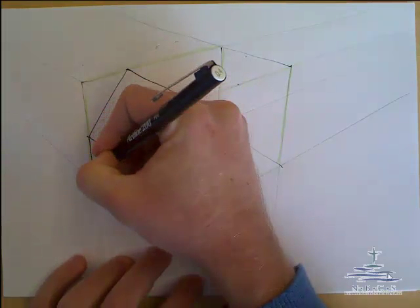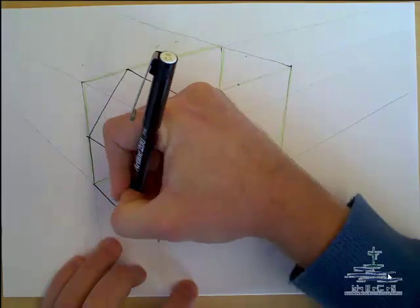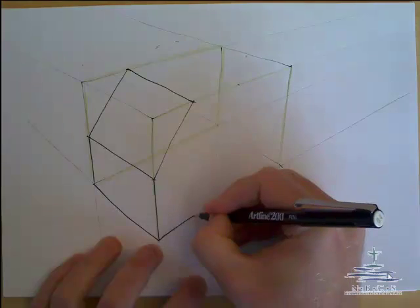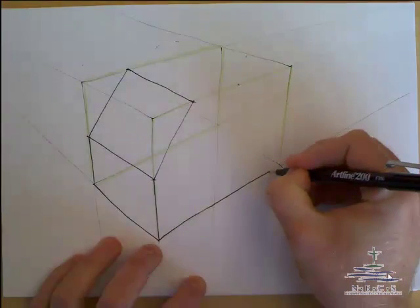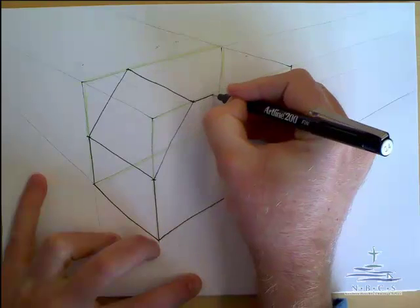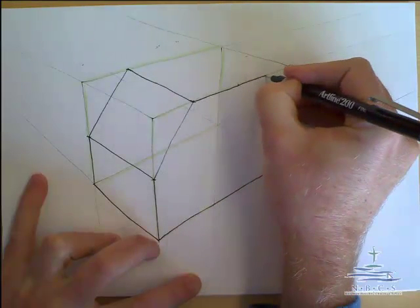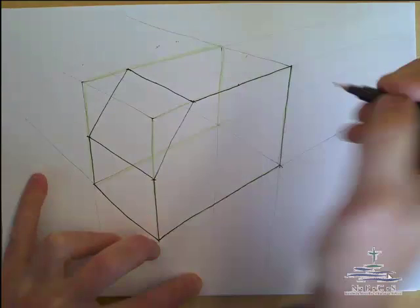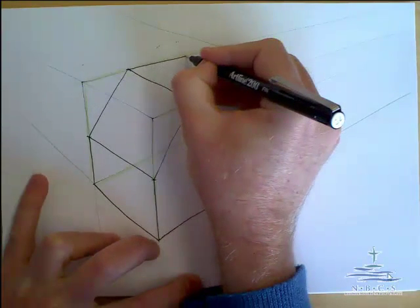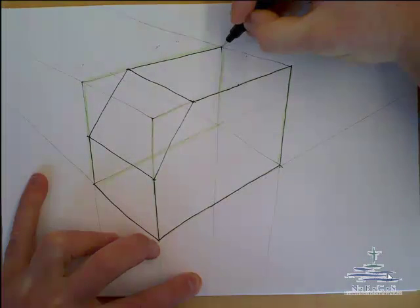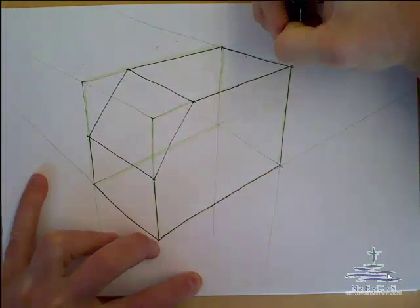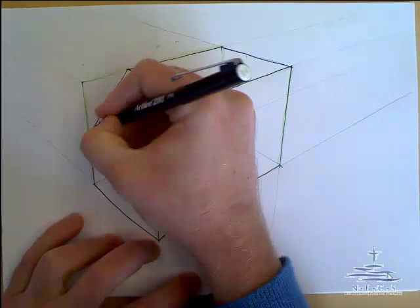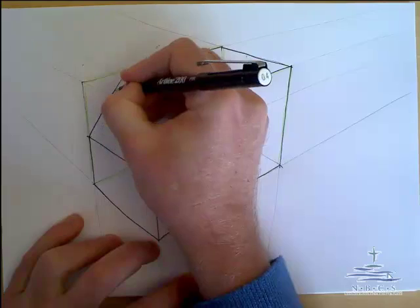We are now going to just firm in the rest of our lines, nice and carefully, remembering we only firm in lines that we see as part of our shape. And then that's a matter of adding the colour into it.